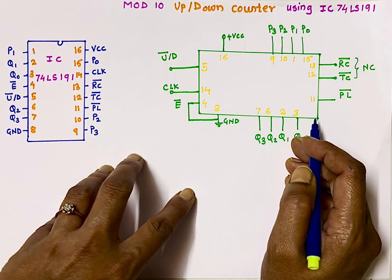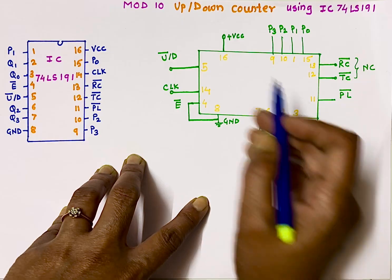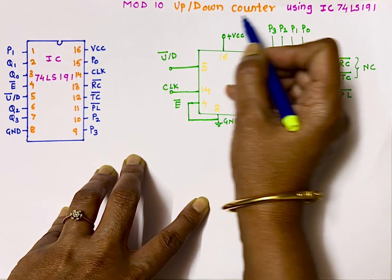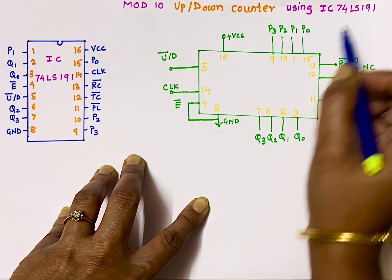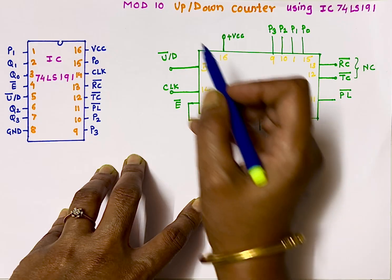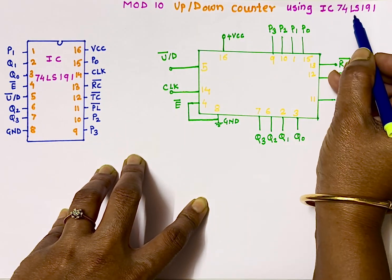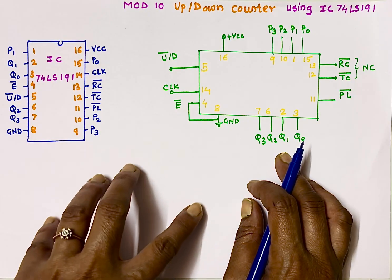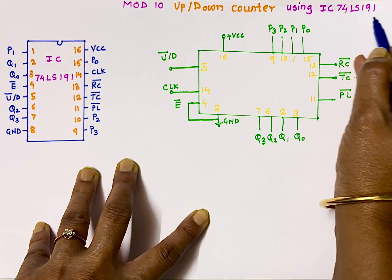Hello everyone, welcome back to my channel. In this video I will tell you how to implement a mod 10 up counter as well as down counter using IC74LS191. I will also tell you how to implement mod 16 up and down counter using IC191. So before we start actual implementation, let's understand what IC74LS191 is.